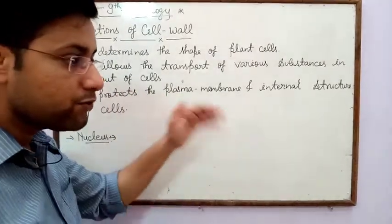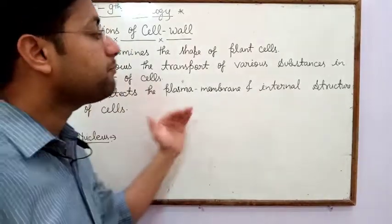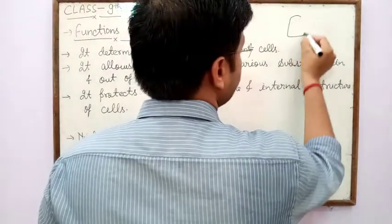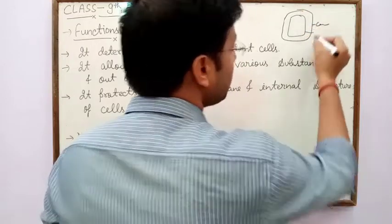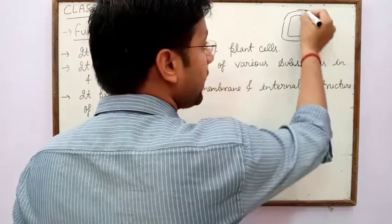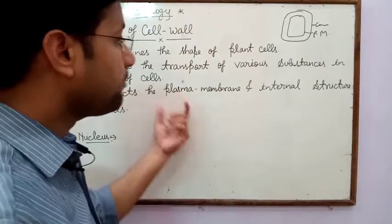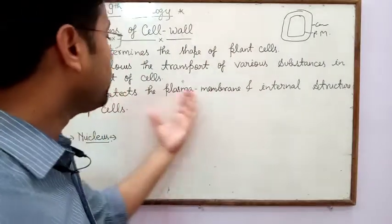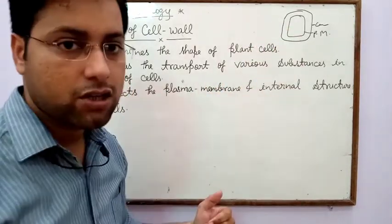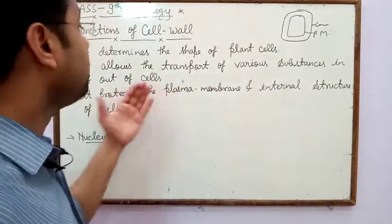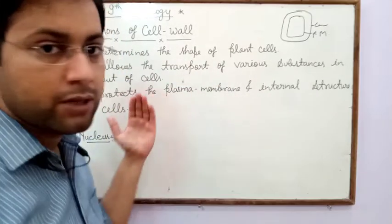Through the cell wall, substances can move from inside to outside or from outside to inside. Cell wall also protects the plasma membrane because after cell wall, plasma membrane is present — so cell wall surrounds the plasma membrane and protects it from outer injury. It also protects the internal structure of the cell.